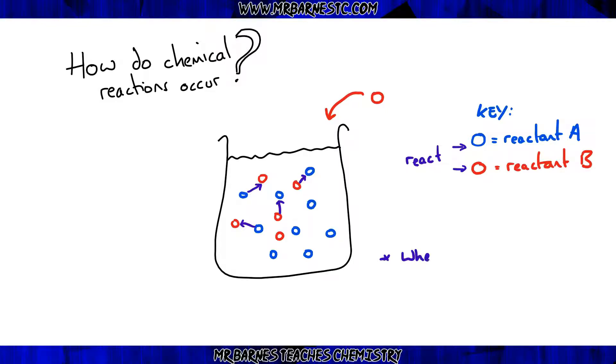However, if there is not enough energy when those particles collide together, when the reactants collide together, there will be no reaction. The reason for that is because it needs a certain amount of energy for that reaction to occur. So your second part of your definition of how do chemical reactions occur is when a collision occurs with enough energy.